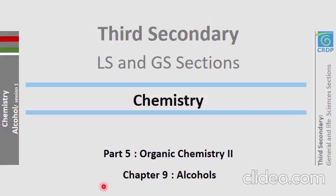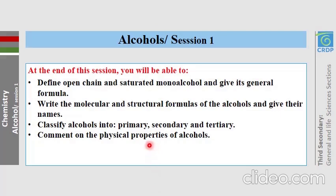Hello students. In this chemistry session for grade 12 LS and GS sections, we are going to talk about alcohols, which is chapter 9 of organic chemistry 2 of your book. By the end of this session, you should be able to define open-chain and saturated mono-alcohols and give their general formula, and write the molecular and structural formulas of alcohols and give their names.